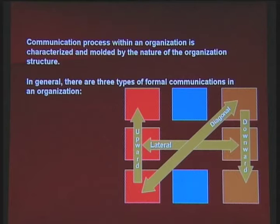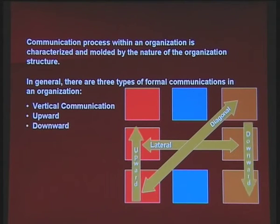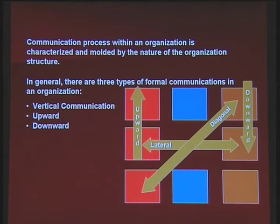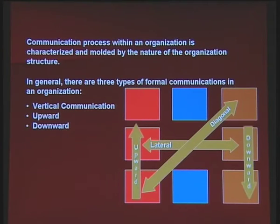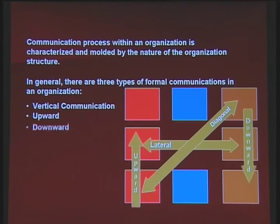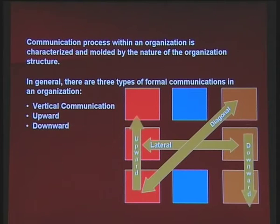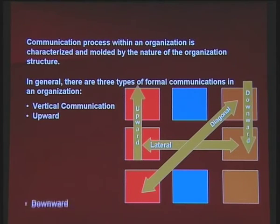In general, there are basically three forms of formal communication within an organization. Formal communication can be divided into three parts. The first is vertical communication — either upward communication, where I move from a clerical level to the principal level, or downward communication, where the boss conveys ideas, thoughts and orders to me. These are the two modes under vertical communication: downward and upward.